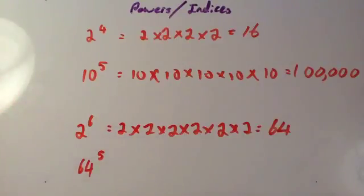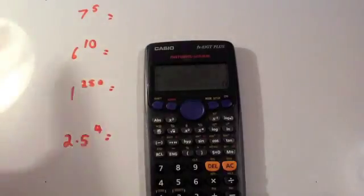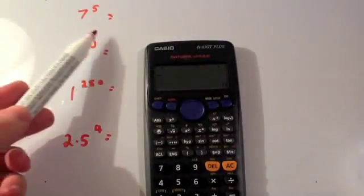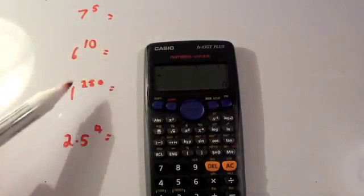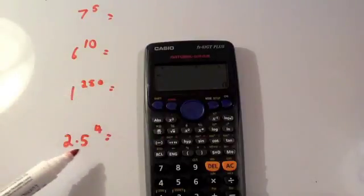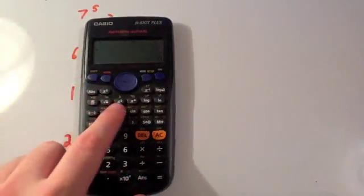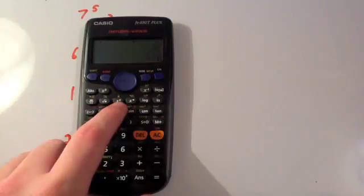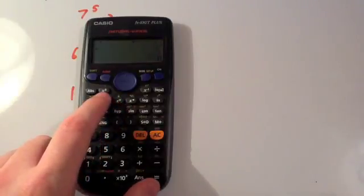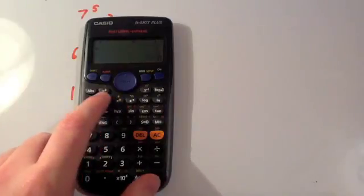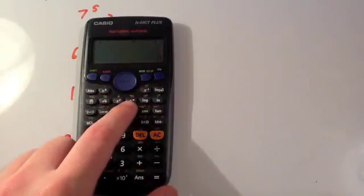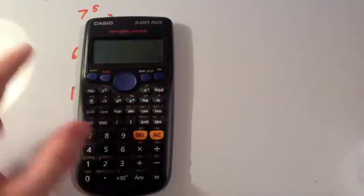We're going to do four different questions: 7 to the power of 5, 6 to the power of 10, 1 to the power of 250, and 2.5 to the power of 4. On the calculator, you need to locate the power button. You'll know the x² button and the x³ button, but you'll want the general power button for any other power — and you can use it for squaring and cubing too.